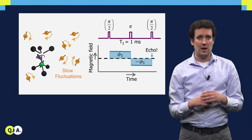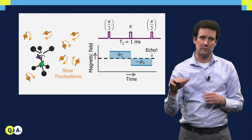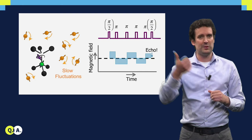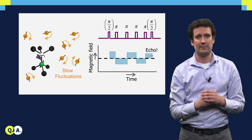Of course, this cancellation only works if the magnetic field is constant over time. But don't worry — as long as the field fluctuates slowly, we can just flip the electron spin multiple times faster and faster so that everything still averages out.